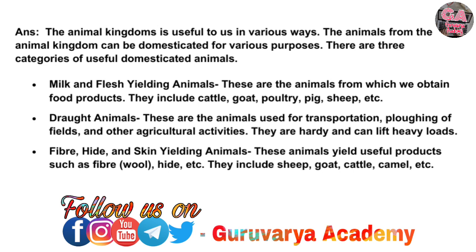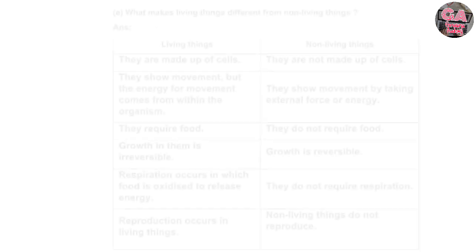Second, draft animals — these are animals used for transportation, plowing of fields, and other agricultural activities. They are hardy and can lift heavy loads. Third, fiber, hide, and skin-yielding animals — these animals yield useful products such as fiber, hide, etc. They include sheep, goat, cattle, camel, etc.